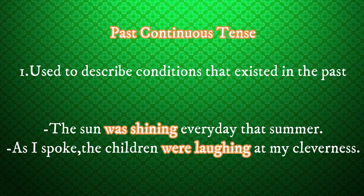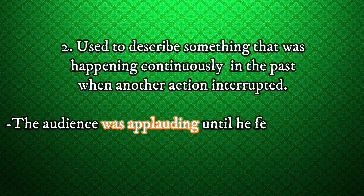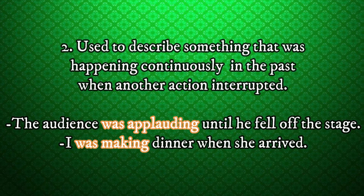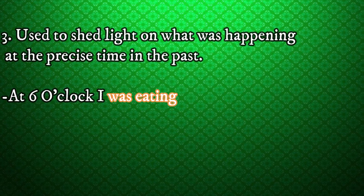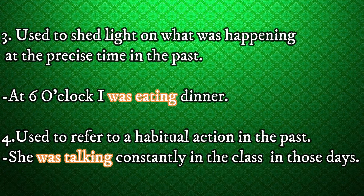It is often used to describe conditions that existed in the past. For example: The sun was shining every day that summer. As I spoke, the children were laughing at my cleverness. It can also describe something that was happening continuously in the past when another action interrupted it. For example: The audience was applauding until he fell off the stage. I was making dinner when she arrived.